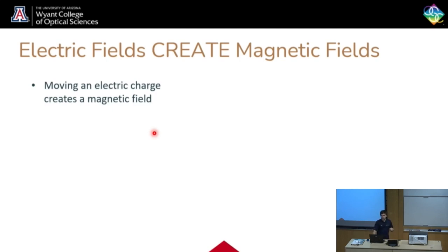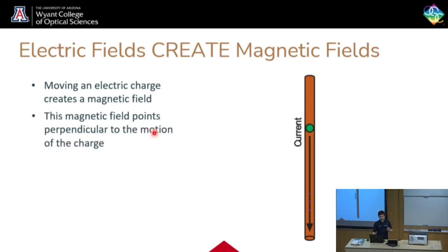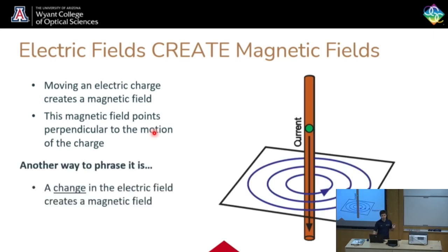Here's the thing: moving an electric charge creates a magnetic field. So let's think about a wire with electrons moving in it with an electric current. And if you move that charge vertically — this is the part you're going to have to just trust me on — the magnetic field will point perpendicular to whatever motion the charge is going in. If you're moving the charge up and down, the direction perpendicular to up and down is all around. And all around looks like a circle.